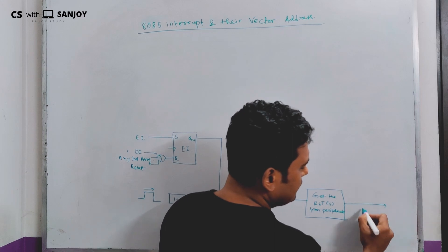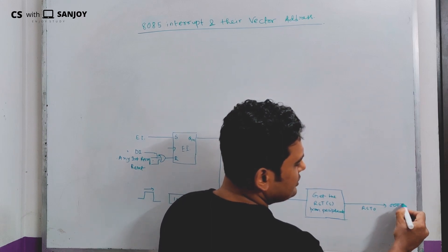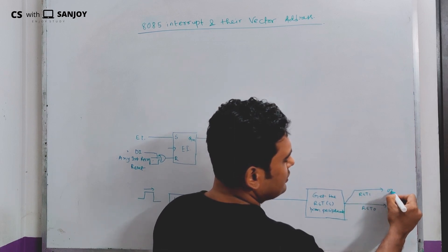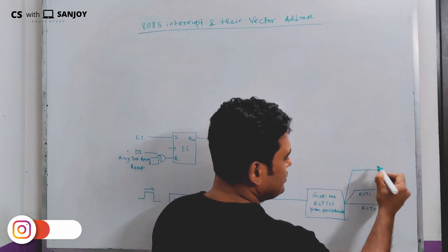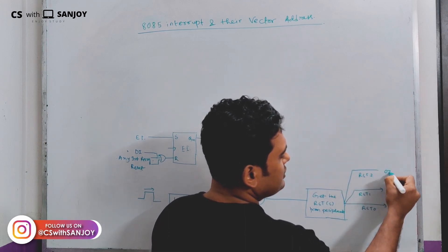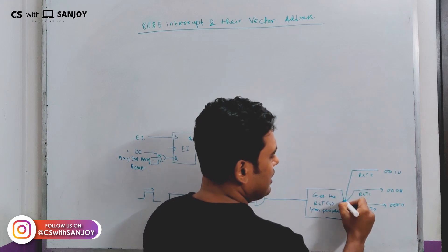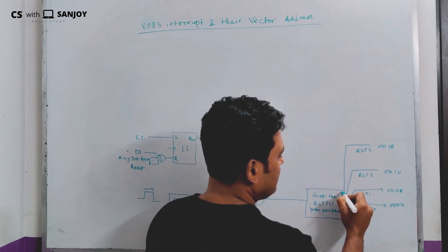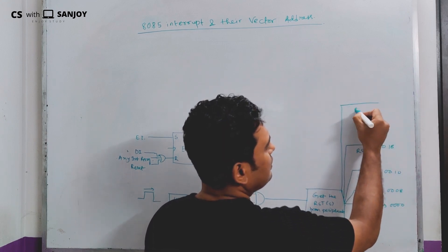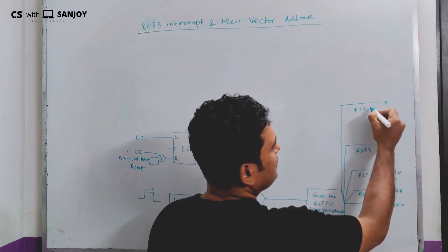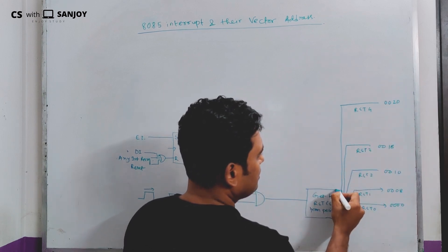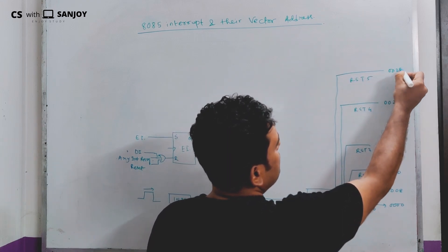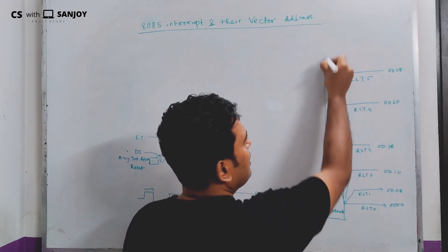For example, RST 0 address is 0000H. RST 1 address is 0008H. RST 2 address is 0010H. RST 3 address is 0018H. RST 4 address is 0020H. RST 5 address is 0028H.